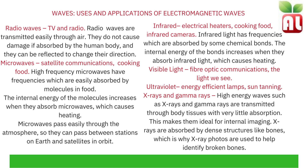Infrared light has frequencies which are absorbed by some chemical bonds; the internal energy of the bonds increases when they absorb infrared light, which causes heating. This is what happens during the greenhouse effect, where greenhouse gases are able to absorb infrared radiation, causing the heating of the atmosphere. Infrared light is also used for fibre optic communications. Ultraviolet is used in energy efficient lamps and sun tanning. X-rays and gamma rays are high energy waves; they are transmitted through body tissues with very little absorption, making them ideal for internal imaging. X-rays are absorbed by dense structures like bones, which is why X-ray photos help identify broken bones.